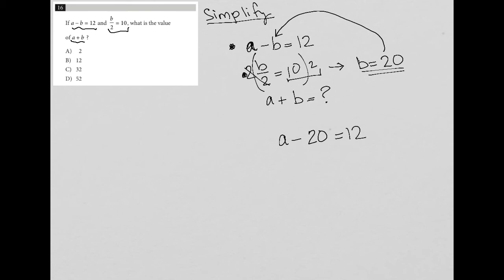I can add 20 to both sides. And what I'm left with is that A is equal to 32. So now I know what A equals and I know what B equals.